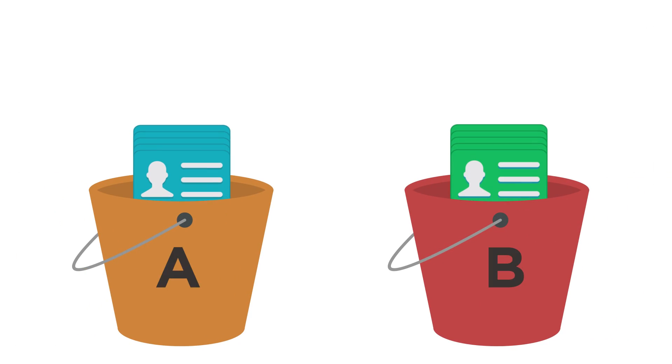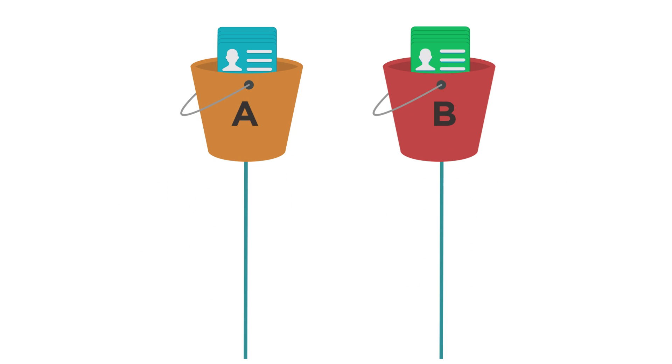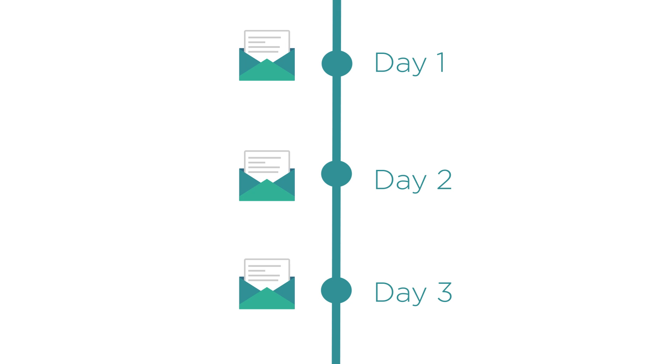This is quite different from the older style of autoresponders where everything is based on lists and everything is linear. For the longest time, you basically had contacts that you could put in separate lists — just putting them in separate buckets. For each bucket you had a linear process: if someone ends up in bucket A, on day one they get this email, on day two they get this email, on day three they get this email, and so on.